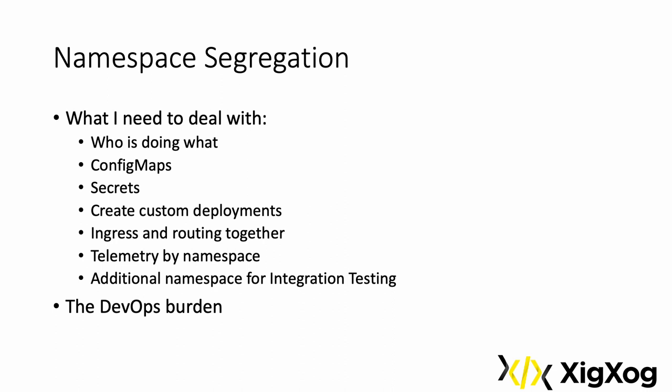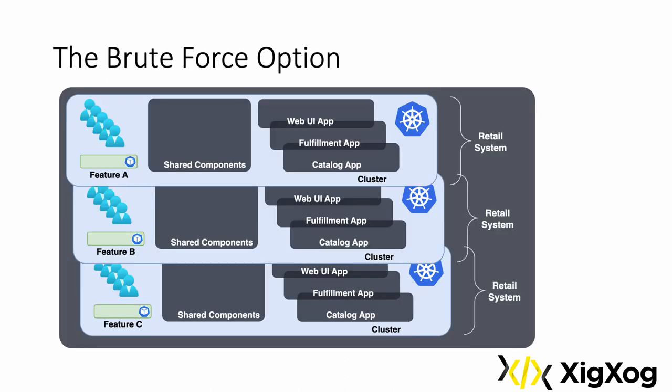We'll probably also create an additional namespace for integration testing — for instance, for smoke testing. Sometimes we end up going down the brute force route and creating separate clusters. Of course, there are significant trade-offs. But in some cases, the brute force option imposes the lowest DevOps overhead and is the least bureaucratic. A clear drawback, though, is obvious: cost.